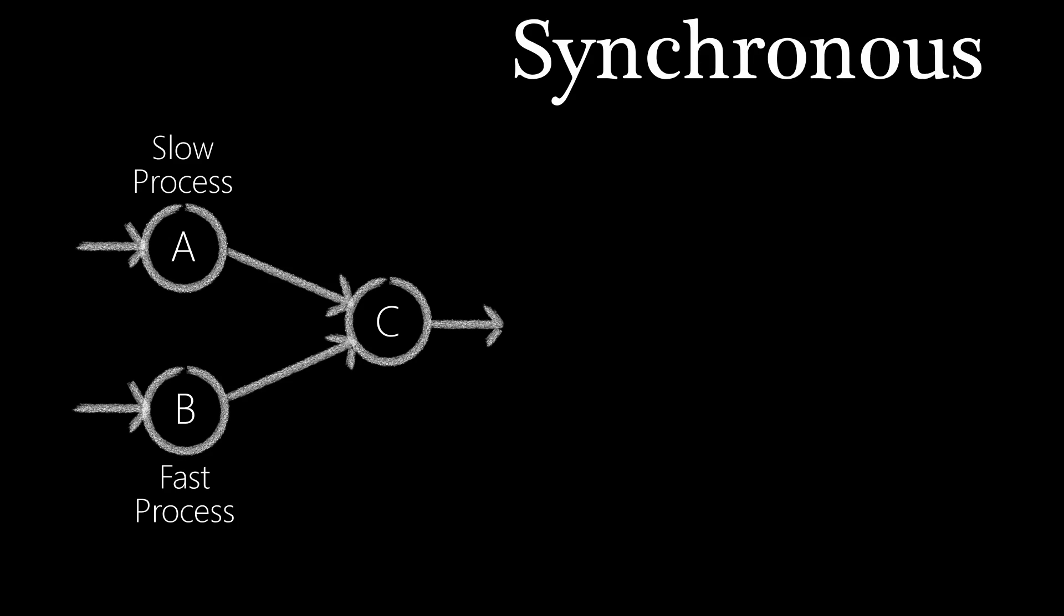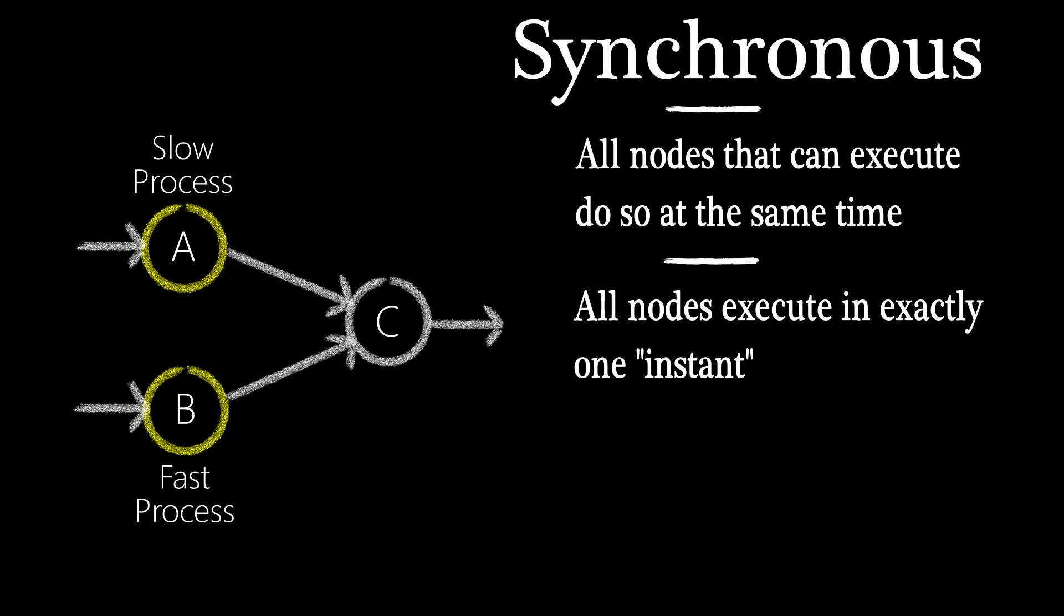With synchronous execution, both A and B have data on their inputs, so they both can execute. B gets done first, but A is still working. This brings us to the first point. Synchronous execution means all the nodes execute at the same time, and their execution always takes exactly one instant.